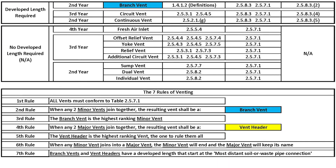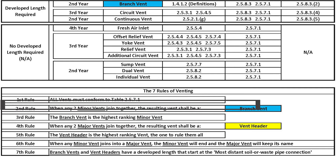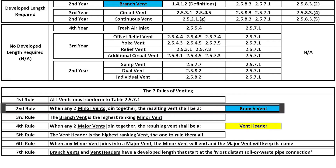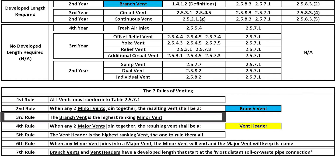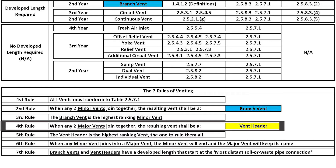Also included is the seven rules of venting that I wrote. Rule number one: all vents must conform to table 2571. Rule number two: when any two minor vents join together, the resulting vent shall be a branch vent. Rule number three: the branch vent is the highest ranking minor vent. Rule number four: when any two major vents join together, the resulting vent shall be a vent header.